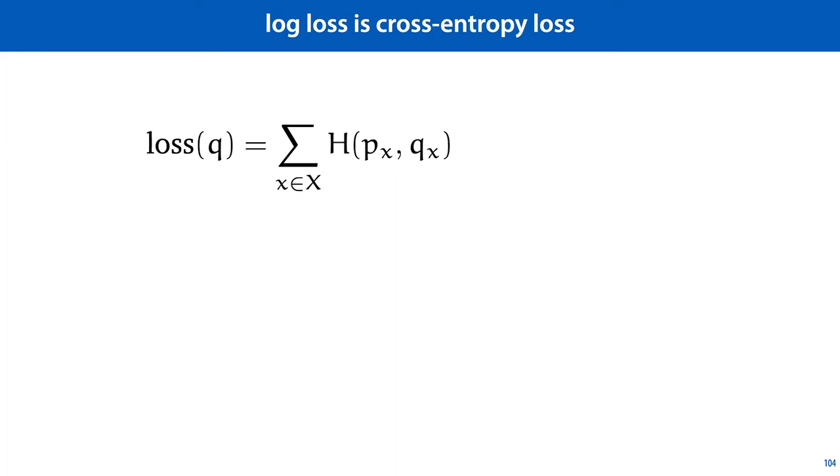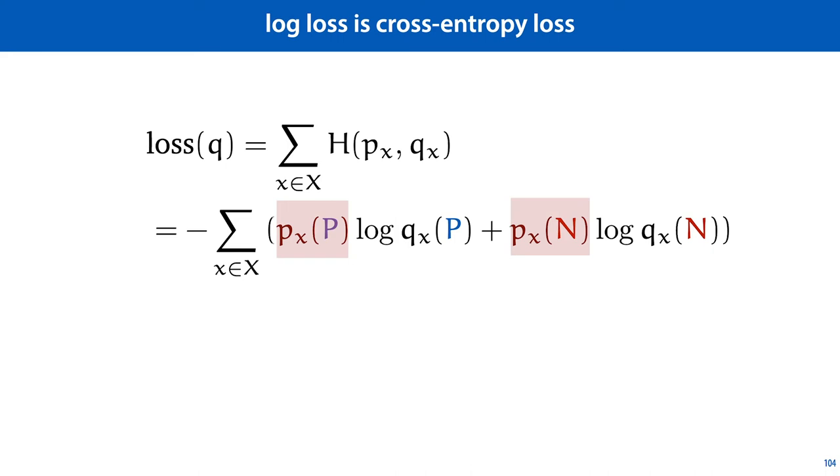If we have a binary classification problem, so we are talking about distributions over the two outcomes positive and negative, and we fill in the definition of the cross-entropy, that looks like this. And if we have a simply labeled data set where the instances are labeled with true classes rather than with class probabilities, then these px's are either 0 or 1. So for the positive instances, only log qx of p remains, and for the negative instances, only log qx of n remains. So the function simplifies to this, which is the log loss function that we already saw for the logistic regression.